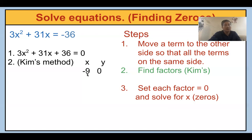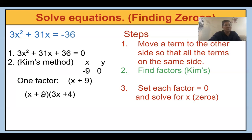If you find that zero, now what do you do? Negative nine is the zero, so what is the factor? x plus nine. Then what is the other factor? x times what gives 3x squared? 3x. And 9 times 4 is 36. So your factor is 3x plus 4. These are your two factors.